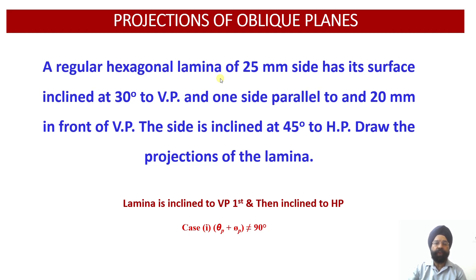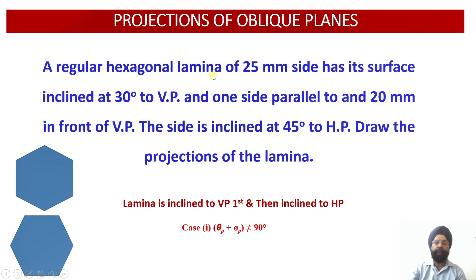Since we are assuming the hexagonal lamina to be parallel to the vertical plane, its front view will be drawn on the vertical plane, and this front view will represent the true shape of the lamina. This front view will be drawn above the XY horizontal line. Before drawing the front and top views, we need to understand how to locate this hexagonal lamina above the XY reference line. There can be two orientations for this.